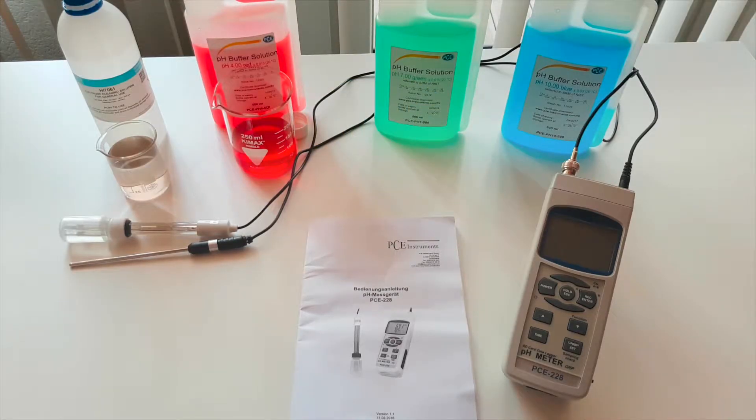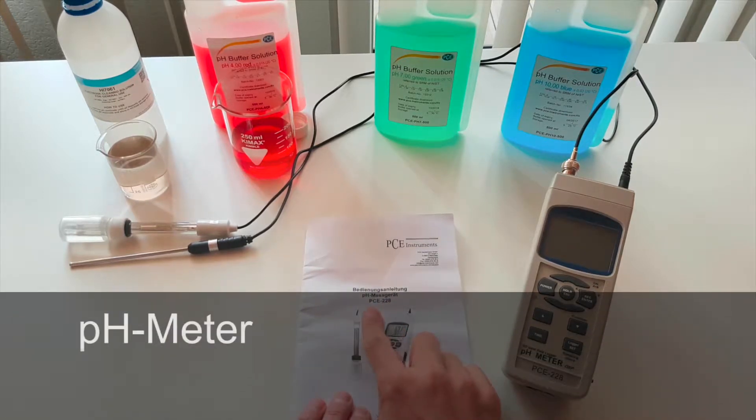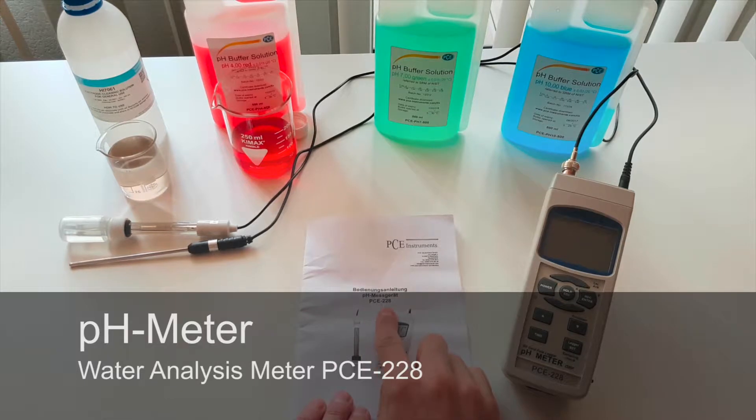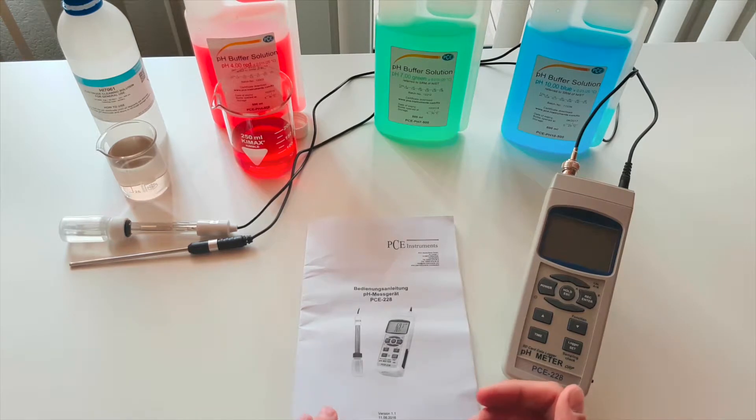Hello everyone. In this video I'd like to show you my PC Instruments Measuring Device. It is a pH measuring device. The model name is PC228. And with this you can measure pH values because it is a pH meter.